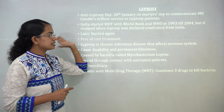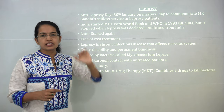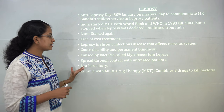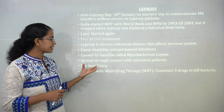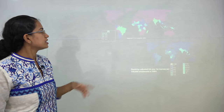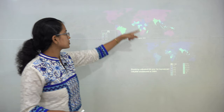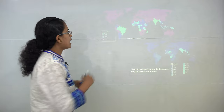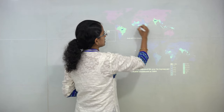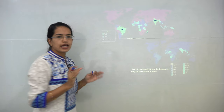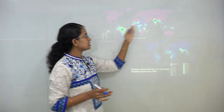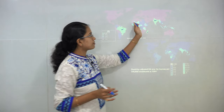Leprosy is a chronic infection which can affect the nervous system. It causes disability and permanent blindness, and is spread through contact with untreated patients. Looking at the global map, the areas with very high incidence of leprosy are mainly Brazil, India, and parts of Africa, while some other regions still have cases.